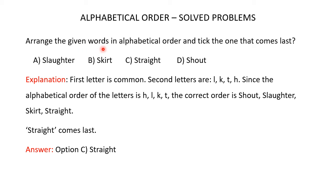Arrange the given words in alphabetical order and tick the one that comes last. You are given four words: Slaughter, Curt, Straight, and Shout. You have to arrange these words in alphabetical order and find out which comes last. When you observe these four words, the first letter S is common in all four words, so you have to consider the second letter: L, K, T, and H. Since the alphabetical order of these letters is H, L, K, and T, the correct order is Shout, Slaughter, Skirt, and Straight. So clearly Straight comes last, and the correct answer is option C, Straight.